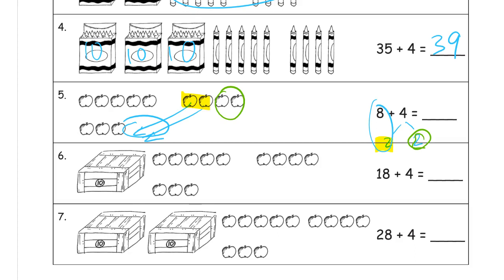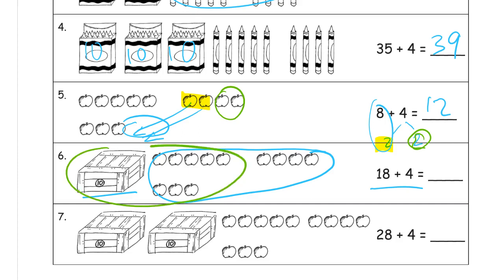So we have ten right here and two more: twelve. We're going to do the same thing again — we know that adds up to twelve. Now if you look at the numbers it says eighteen plus four. When we look at the picture we're thinking twelve plus ten more — that's twenty-two. And here we have two more tens, so it's twelve plus two more tens: thirty-two.